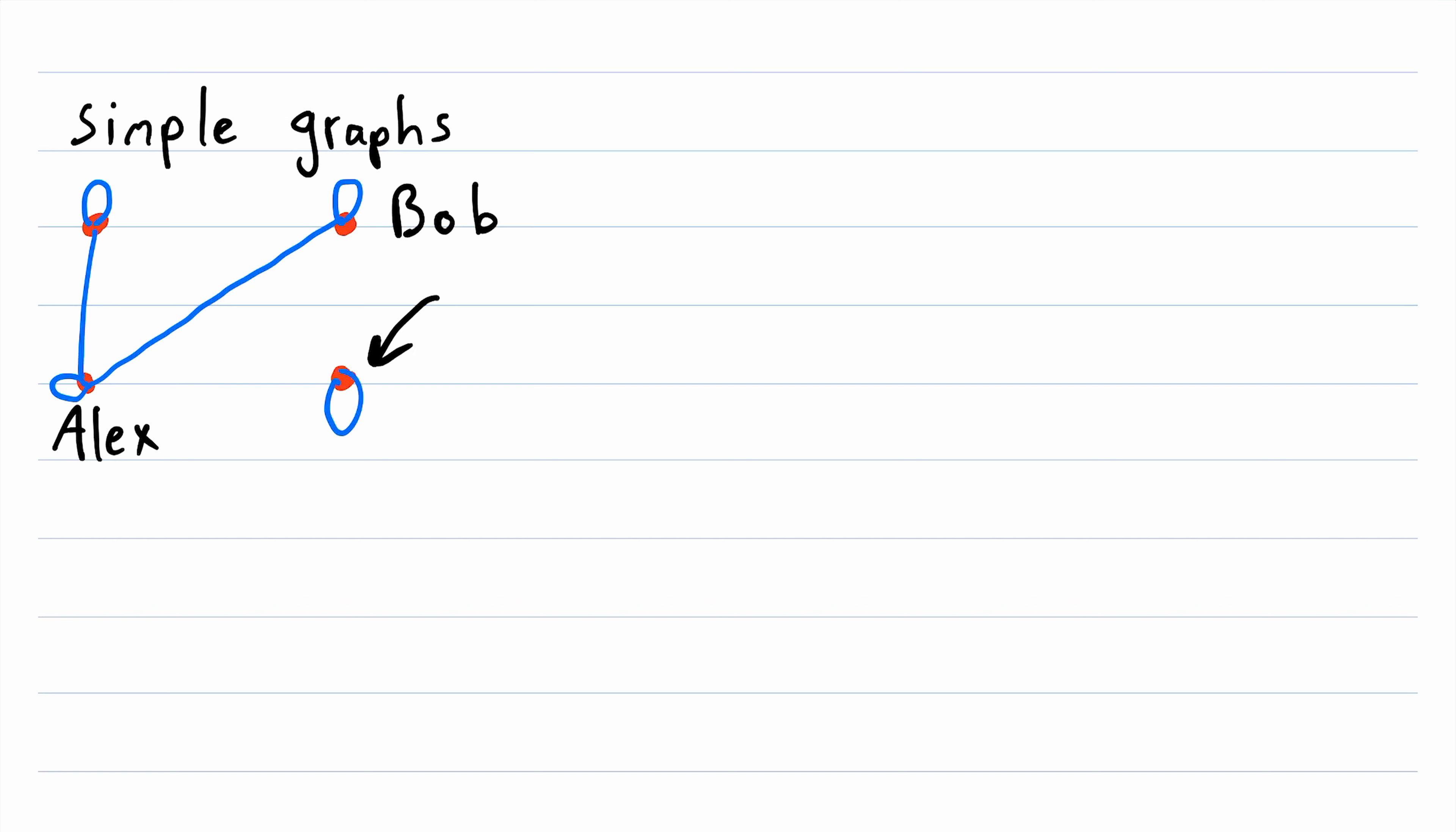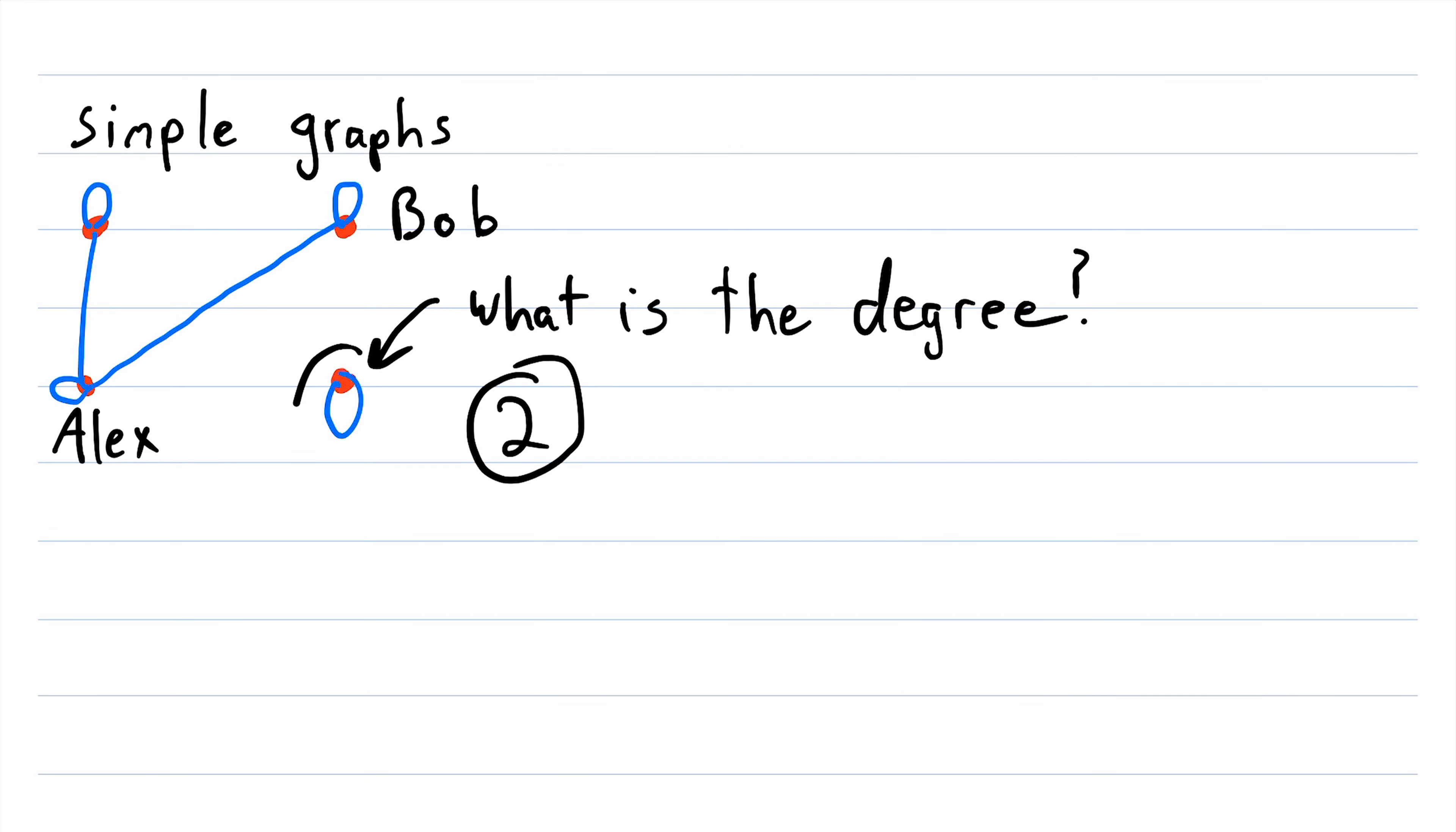An interesting question to ask now is what is the degree of this vertex? Remember that in simple graphs we said that the degree of a vertex is the number of vertices it's adjacent to or the number of edges it's incident to. So you might be tempted to say that the degree of this vertex is 1 because it's only adjacent to itself, but in fact its degree is 2. You could think of this as being because an edge contacts this vertex 2 times. If we draw this loop again you can see the edge contacts the vertex once and then it comes around and contacts it a second time. So that's one way of justifying this that the degree is 2.